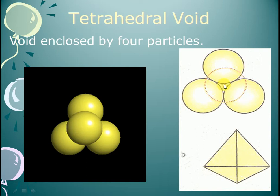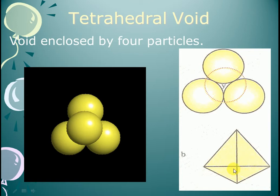This void structure forms a tetrahedral shape. This shape is called a tetrahedral void because the shape it forms is tetrahedral. This is the tetrahedral shape found inside the crystal structure.